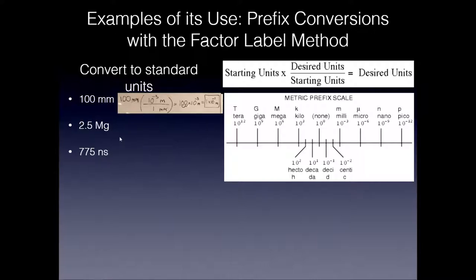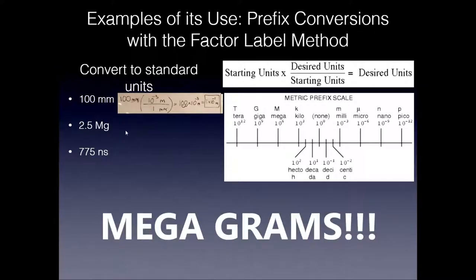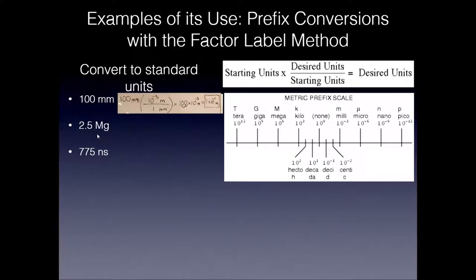What about 2.5 Mg? Capital M stands for mega. So this is megagrams. We don't usually use that very much, but it's possible. 2.5 megagrams, convert that to regular grams. Here we have our M, standing for mega, which stands for 10 to the 6. So we'll put our starting units first, 2.5 megagrams. Put our desired units next on top, divided by our starting units. According to this chart, 1 megagram is equal to 10 to the 6 grams. So we're going to multiply. This is in perfect scientific notation right out the box, 2.5 times 10 to the 6 grams, or 2.5 million grams.